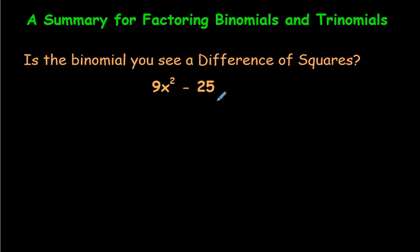What if you get a question like this: 9x squared minus 25? When you're looking at this, it is a binomial. If you see a minus sign in between, and if the very first term and the last term happen to be perfect squares, then you know you can write the answer very quickly.